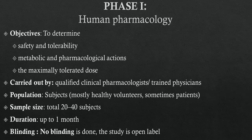Phase 1: Human Pharmacology and Safety Studies. The emphasis is on safety and tolerability, while the purpose is to observe the pharmacodynamic effects in man and to characterize absorption, distribution, metabolism, and excretion. The first human administration of the drug is carried out by qualified clinical pharmacologists or trained physicians in a setting where all vital functions are monitored and emergency or resuscitative facilities are available. Subjects, mostly healthy volunteers and sometimes patients, are exposed to the drug one by one — total 20 to 40 subjects — starting with the lowest estimated dose and increasing stepwise to achieve the effective dose. Duration is about up to one month. No blinding is done; the study is open label.